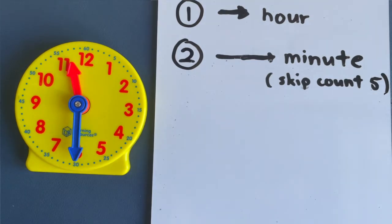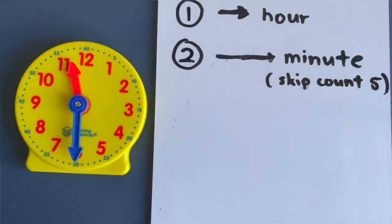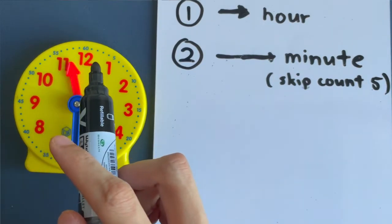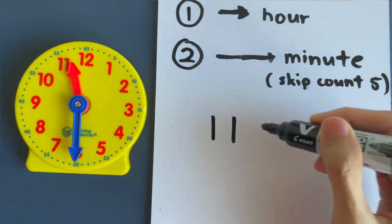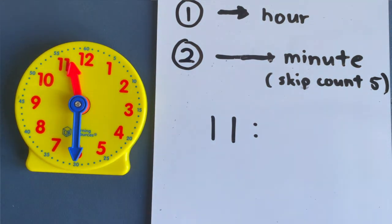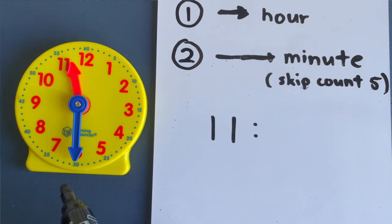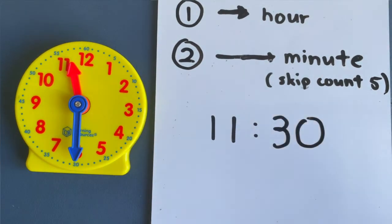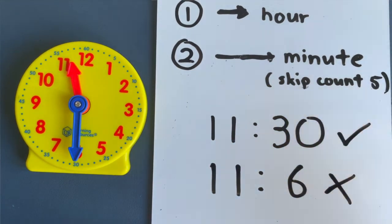Third example — what is the time? Follow the steps. Where is the hour hand? This time it is not pointing at 11 and not pointing at 12 — it's pointing in the middle. When the hour hand is somewhere in between 11 and 12, it is still 11 o'clock. It's past 11 but has not reached 12 o'clock yet, so we write 11. Second step: look at the minute hand and skip count in fives — 5, 10, 15, 20, 25, 30. Write down 30. Remember, do not write 11:6 — that is wrong. Remember to skip count in fives. The time is 11:30.